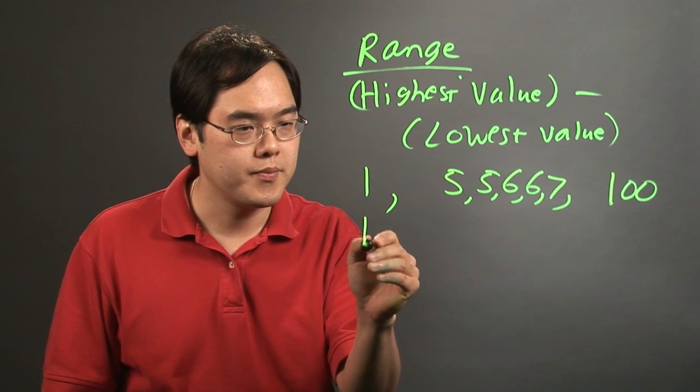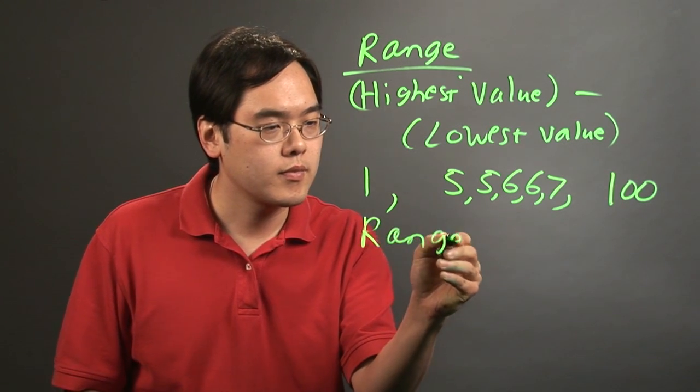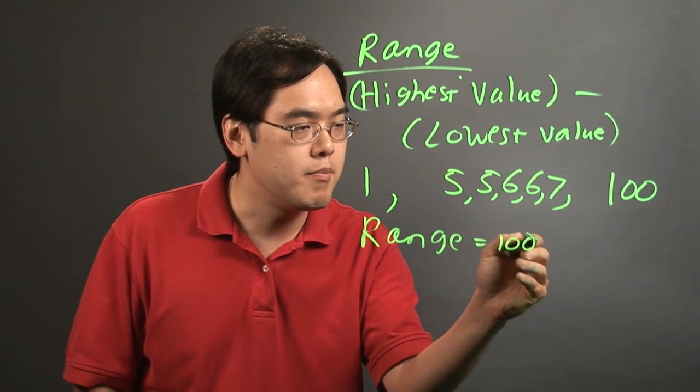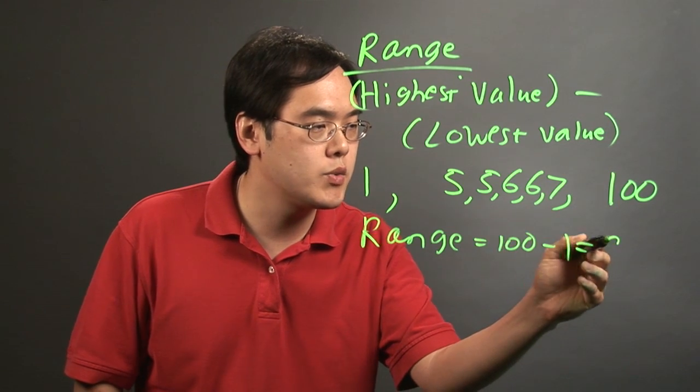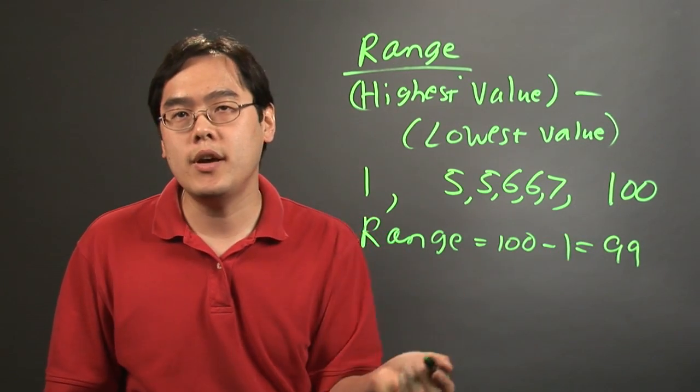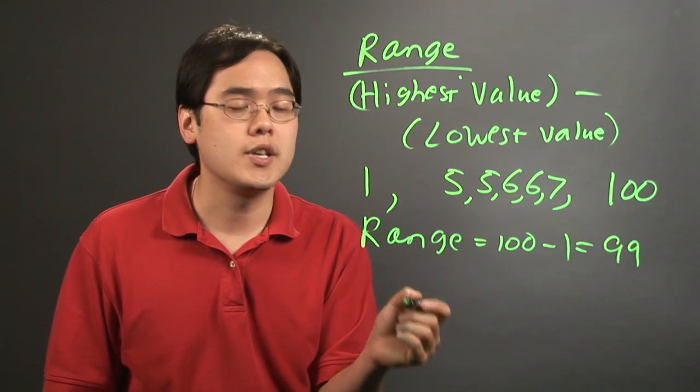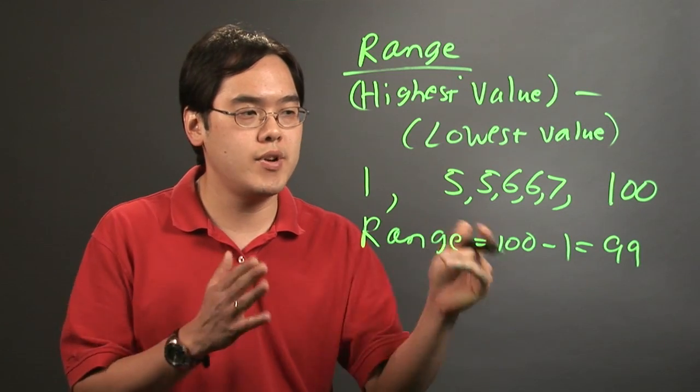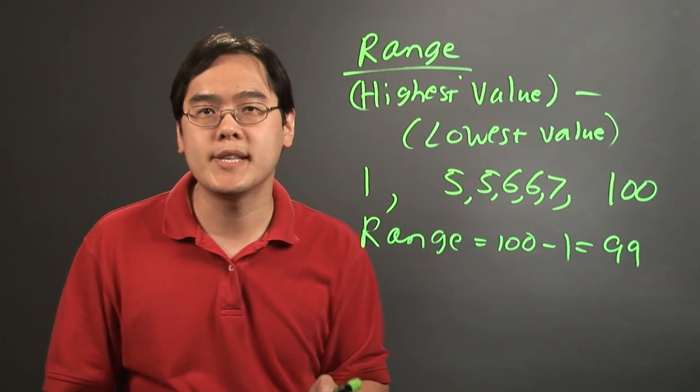Now the range here is 100 minus 1, the highest minus lowest, which is going to be 99. So it tells you here on the surface that the data points are pretty spread out. They're 99 units between the lowest and highest.